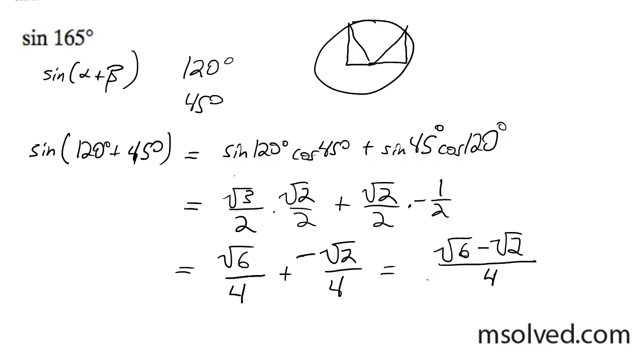If we want to take this farther, we can even do, that is your final answer there, but we can pull out a 1 fourth and we can do 1 over 4 times square root of root 6 minus root 2. That's it.